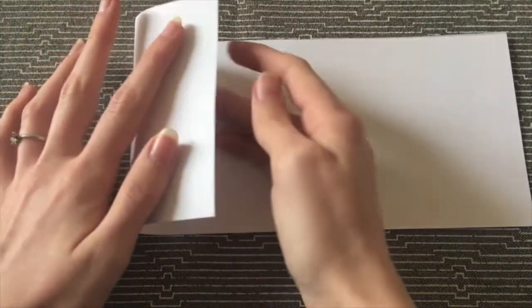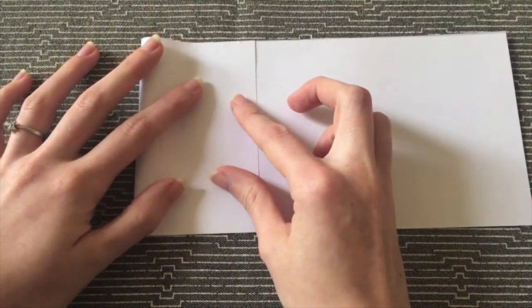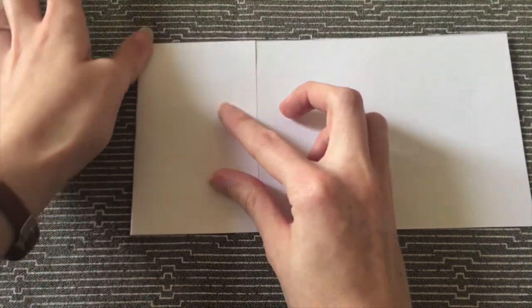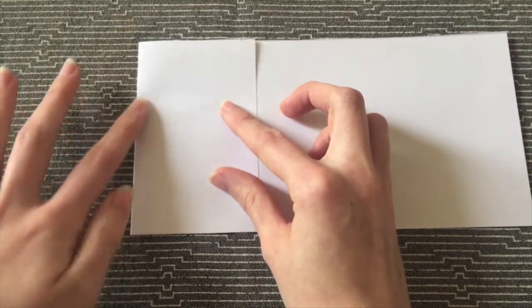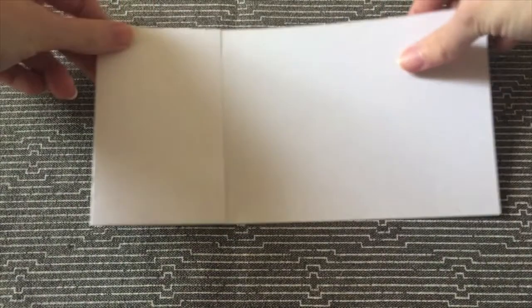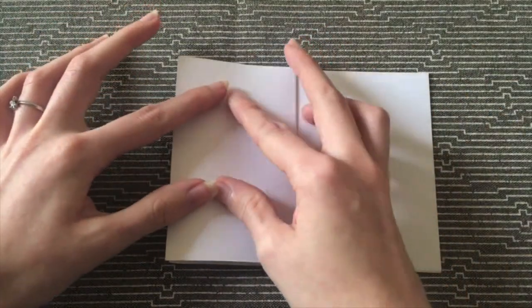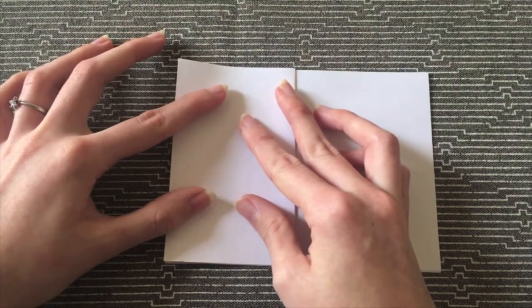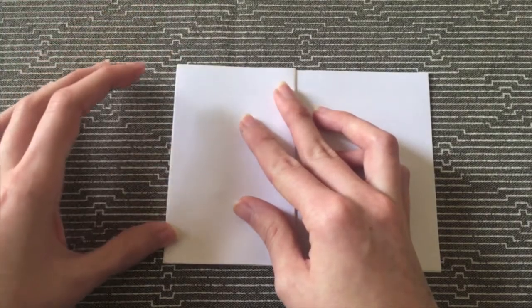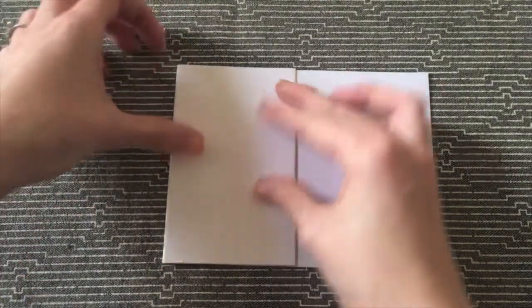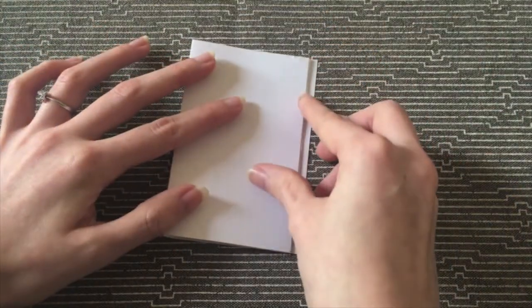I'm going to take the end, and we're going to decide about how big we want our pages to be. That looks about right. And make a fold right there. Now we're going to flip it around, and fold it the same way. Make the pages the same size. And I keep going like that until I get to the end of that paper.